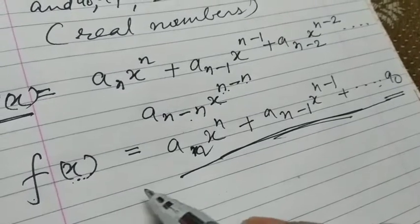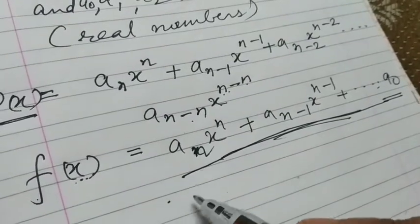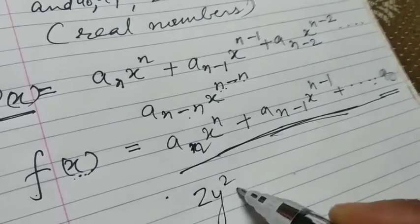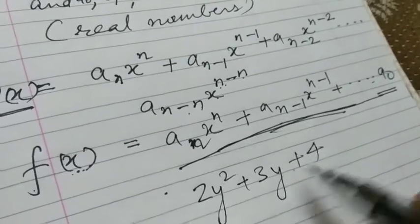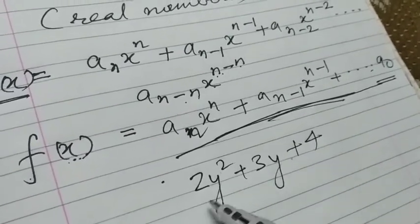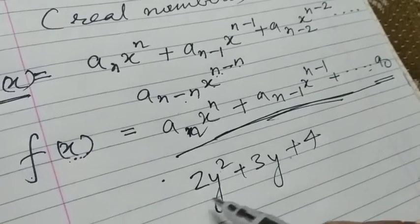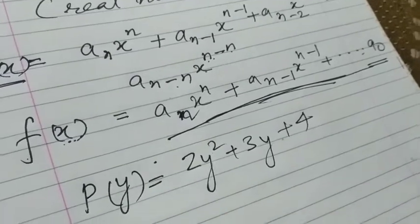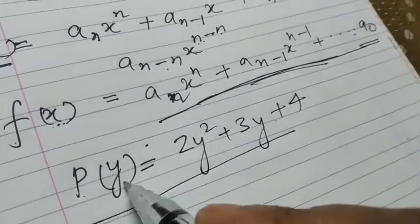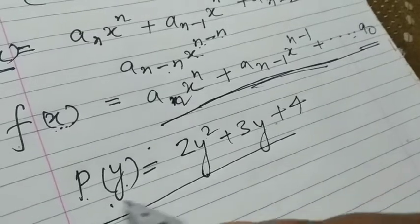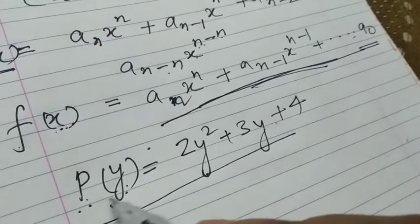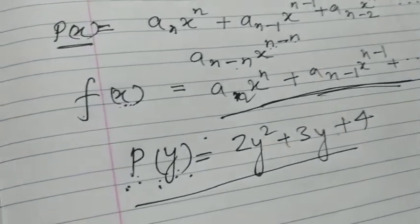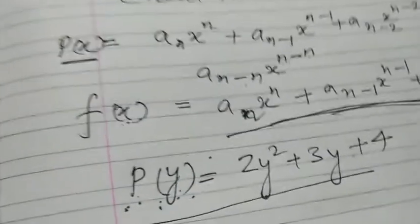For example, take the expression 2y² + 3y + 4, where y is the variable. This is a polynomial in y, so you can represent it as p(y). Hence p(y) = 2y² + 3y + 4.